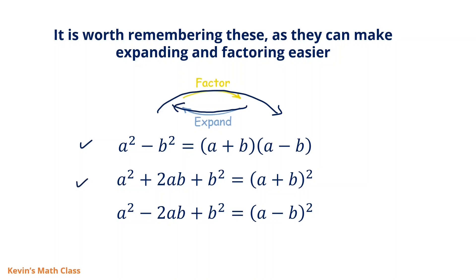The next one is a squared plus 2ab plus b squared equals (a plus b) squared. You should be able to do factoring and expanding with this as well — expanding will be used more often. And thirdly, a squared minus 2ab plus b squared equals (a minus b) squared. These two are very similar; the only difference is plus and minus.